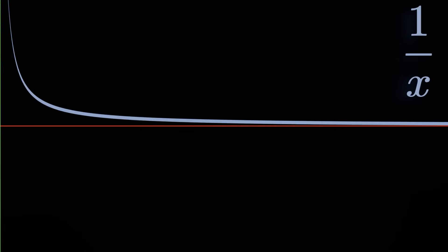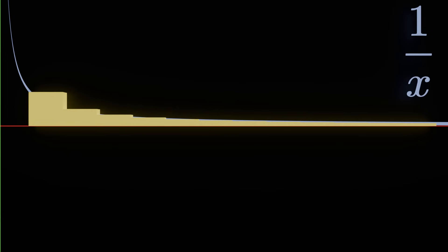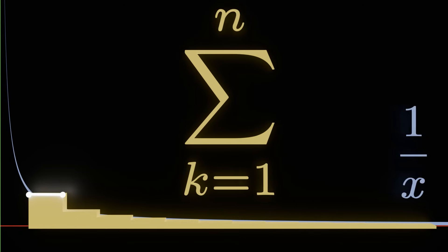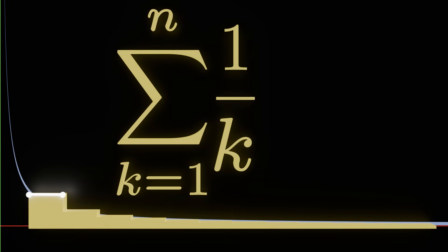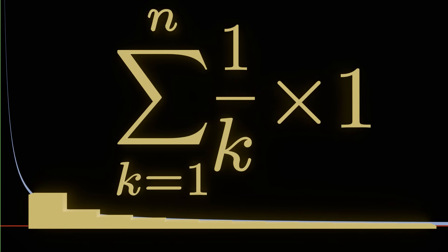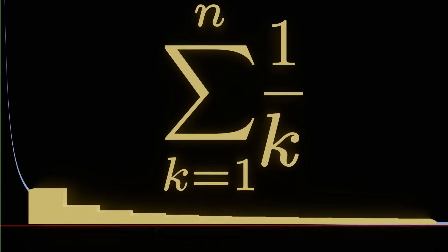There are two ways to approach this. The first is to approximate the area using rectangles. Each rectangle starts at a certain value from our function and extends one unit of length. If we add together the area of all rectangles, that's the area under those rectangles — in other words, the sum of all their areas. The area of each rectangle is height times width: height is 1/k and width is always 1. So this is just the sum of 1/k — the harmonic series, describing the approximation of the area outlined by the rectangles.